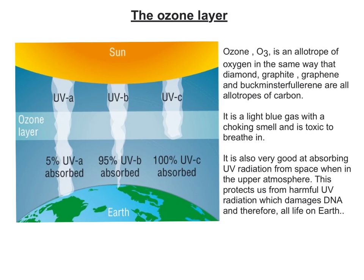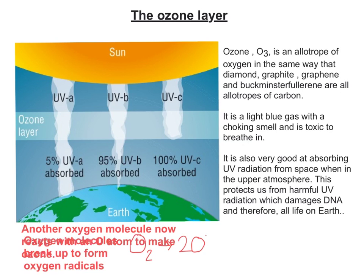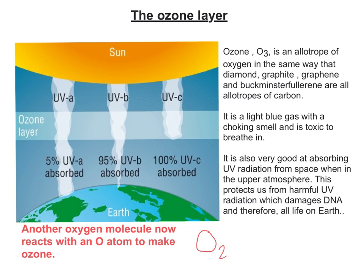The reason ozone forms so easily closer to where the sun is, is that the UV light actually causes the O2 molecule to break up and produce oxygen radicals. So you start off with O2, and this produces two free oxygen atoms. O2 then reacts with an oxygen radical — this is an equilibrium, so it's reversible — to make O3, and the O3 is the ozone.